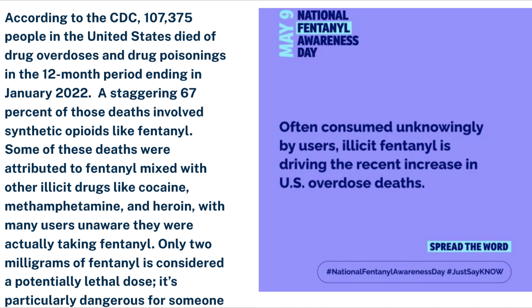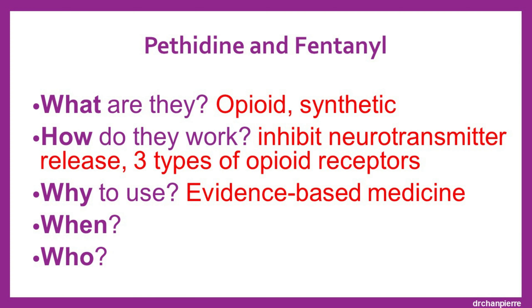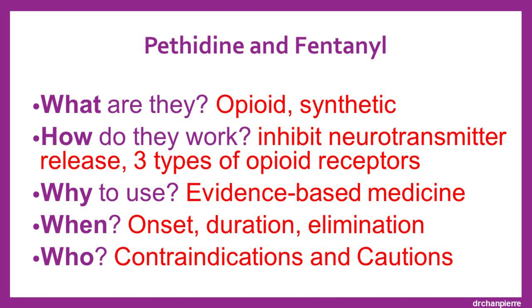Only 2 mg of fentanyl is considered a potentially lethal dose. In summary, pethidine and fentanyl are synthetic opioids that work by inhibiting neurotransmitter release. There are three types of opioid receptors. Using evidence-based medicine, we need to understand the onset, duration, and elimination of the opioid, and we should be familiar with the contraindications and cautions before using pethidine and fentanyl.